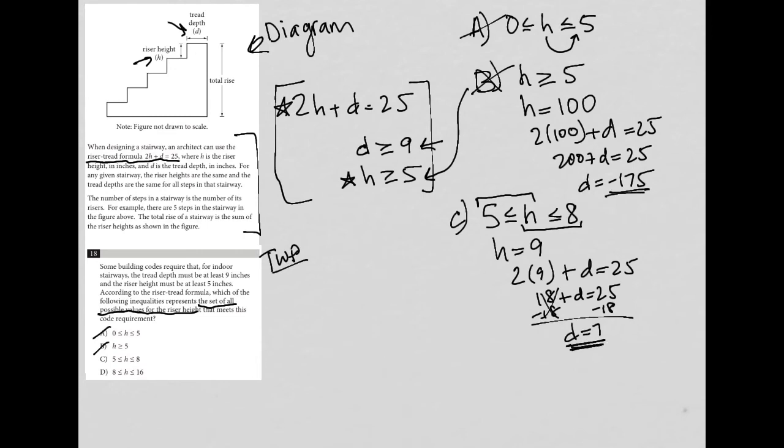And once again, if D is 7, that means H cannot equal 9, because we want D to be greater than or equal to 9, whereas 7 is less than 9. So for that reason, C actually looks pretty good, because then this is kind of saying, hey, 8 is that maximum point. I'm going to take a peek at D. D says that H is between 8 and 16. Well, we already tested out H equals 9, and we know that it can't equal 9. And since 9 is within that range, I'm going to cross D out. This makes C the best answer by default.